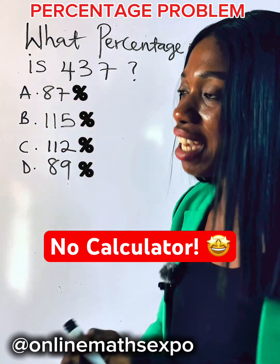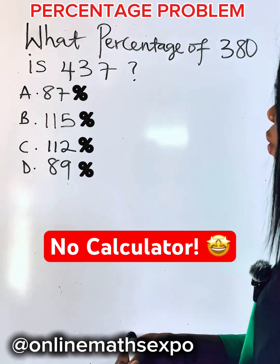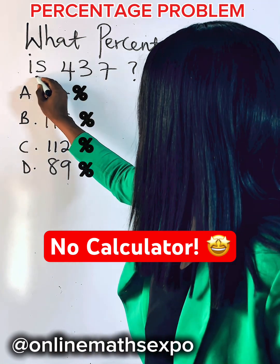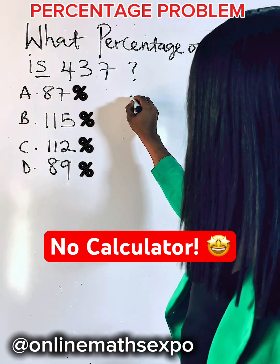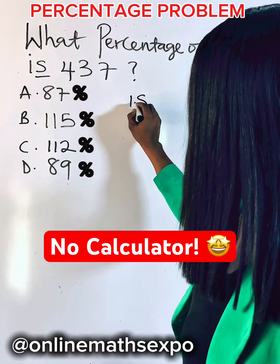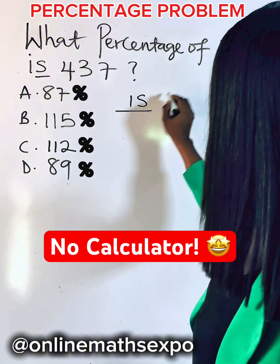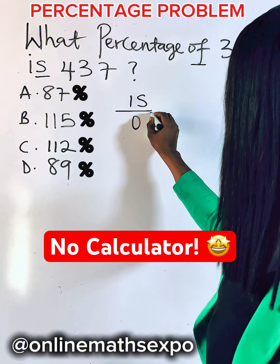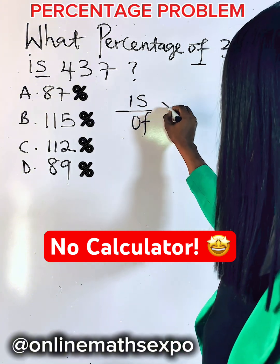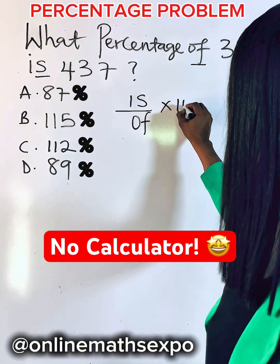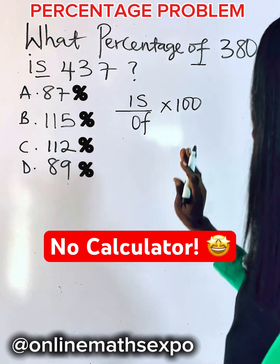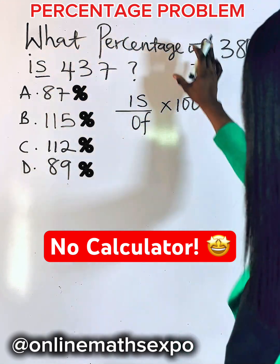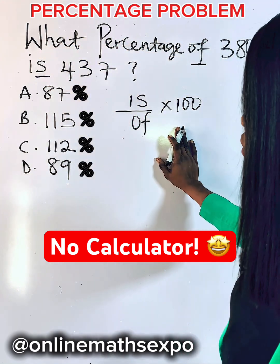Now see the magic. What you do is divide it by 'of', then multiply by 100. So when you see this kind of question, this is what you do.